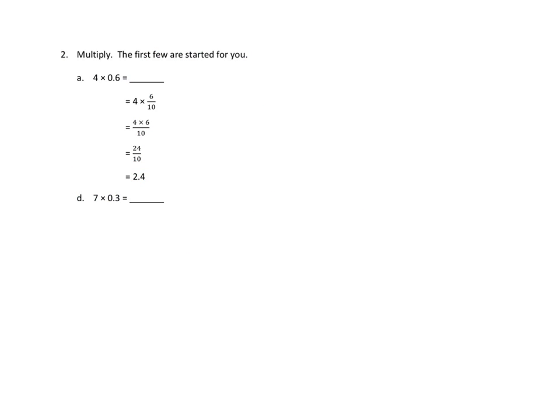Let's take a look at one more problem from tonight's homework. I'm going to kind of go through the one that they provide as a way of helping to get you there. We are going to multiply. The first few are started for you. Four times six tenths. Let's just see what they did here. They just took the decimal form, and they rewrote it as a fraction. Four times six tenths. Awesome. And once they had that, they noticed that this means you just multiply in the denominator the four times six.